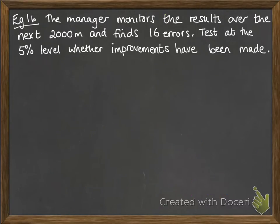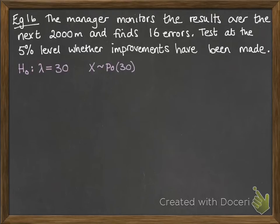Now for part B. The manager monitors results over the next 2,000 metres to test this further. He finds 16 errors. We want to test at the 5% level whether improvements have been made. Our null hypothesis is that lambda equals 30, scaling up to 2,000 metres. So X follows a Poisson distribution with mean 30, and our alternative hypothesis is that lambda is less than 30 — that he's reduced the number of errors.